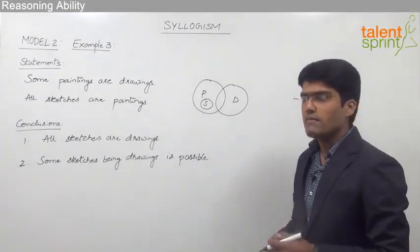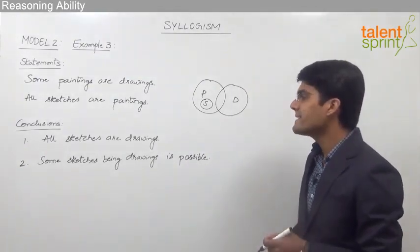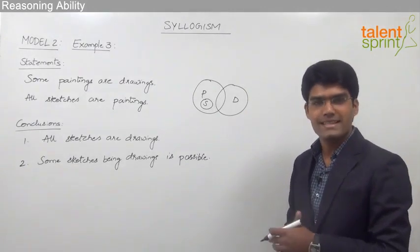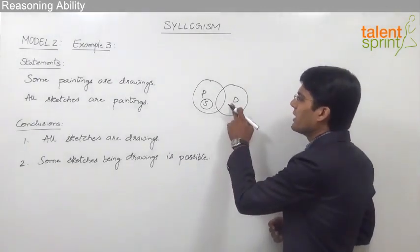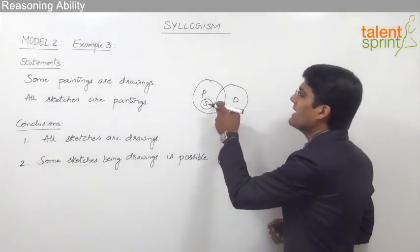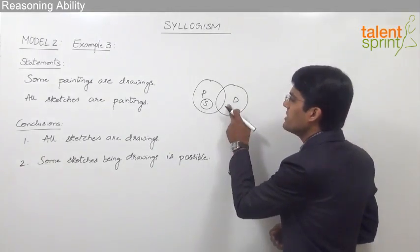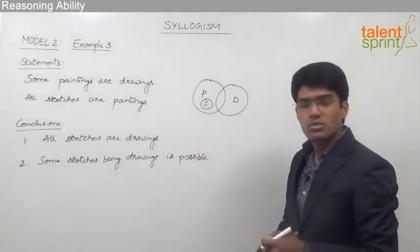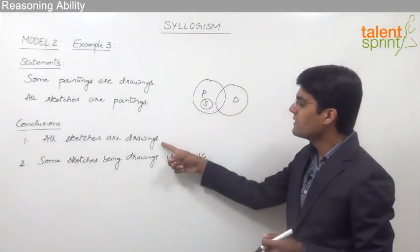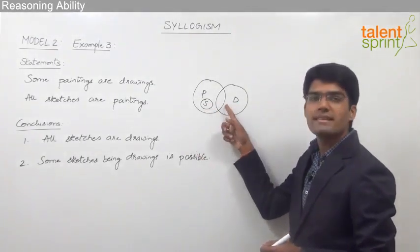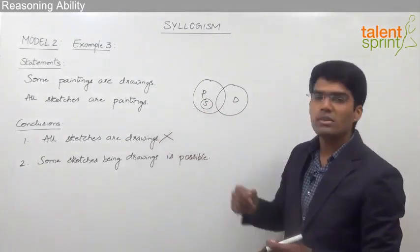The first conclusion is 'all sketches are drawings.' As you can see in the basic diagram, sketches and drawings do not overlap at all — they are completely disjoint from each other, so no sketch is a drawing. But the conclusion says all sketches are drawings, so very clearly the first conclusion does not follow the basic diagram and does not follow the given statements.